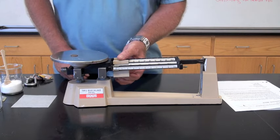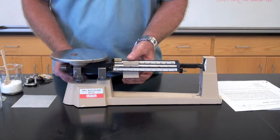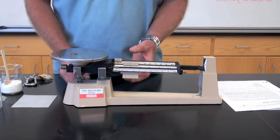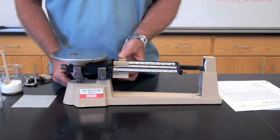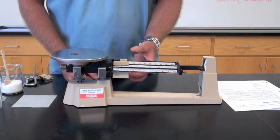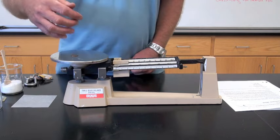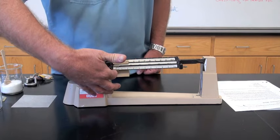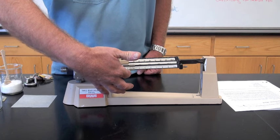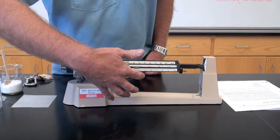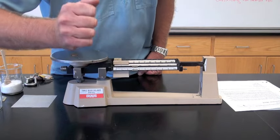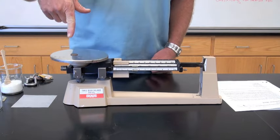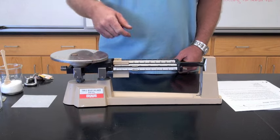We always start with the middle rider, the hundred-gram rider first, and the pointer drops below zero, we know we've gone too far. So we back up and go to the ten-gram rider in the back, also too far. Now we go to the tenth of a gram rider in the front, and carefully move it over until the pointer is at zero. And when we have a mass of our penny, up to the tenth of a gram.